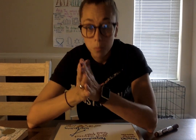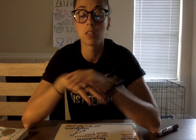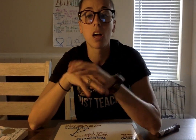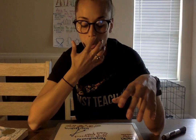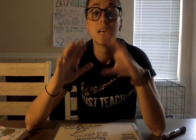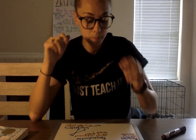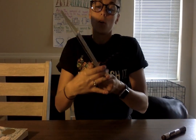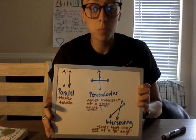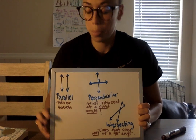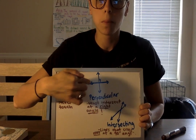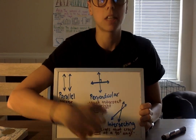You'll be thankful to hear that today's math lesson is going to be super quick and pretty easy. It's kind of just a lot of vocabulary, so we're going to be going into types of lines and we're just going to talk about three today. So this should be a review: we have parallel lines, perpendicular, and intersecting.